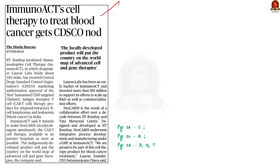According to this news article, the Central Drugs Standard Control Organisation (CDSCO) gave approval for India's first Chimeric Antigen Receptor T-cell therapy product, in short called CAR T-cell therapy. This therapy is used to treat blood cancer, and this is the first time the CAR T-cell therapy product was successfully manufactured in India. It was manufactured by the Mumbai-based company Immunoadaptive Cell Therapy Private Limited. The approval will revolutionize blood cancer treatment in India.